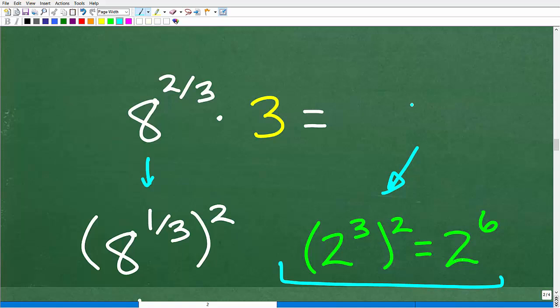The property here that we are interested in using is A to the M to the N. So we have a power to an outside exponent. We could just multiply that outside exponent to the inside exponent. So 2 to the 3rd squared is equal to 2 to the 3 times 2, or 2 to the 6th.